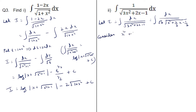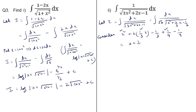Consider x squared plus 2 by 3 x, writing it as 2 times (1 by 3)x minus 1 by 3. Adding and subtracting 1 by 9: if we consider those three terms, it is nothing but (x plus 1 by 3) whole squared. So it is (x plus 1 by 3) whole squared minus 1 by 3 minus 1 by 9, which is minus 4 by 9, or (x plus 1 by 3) whole squared minus (2 by 3) whole squared.